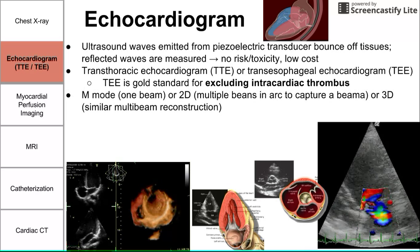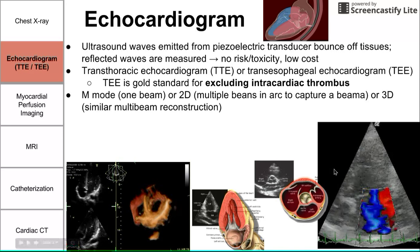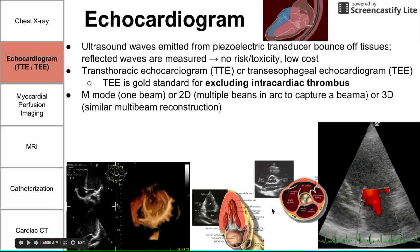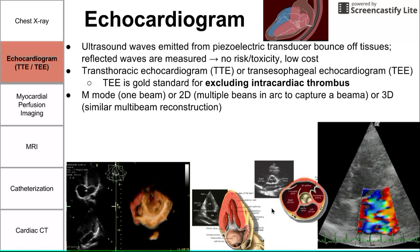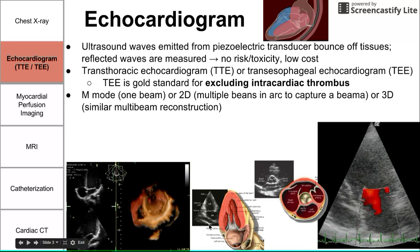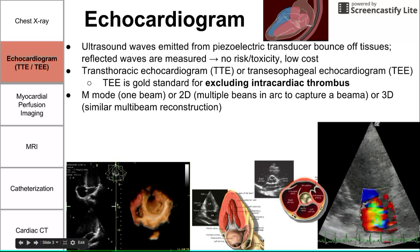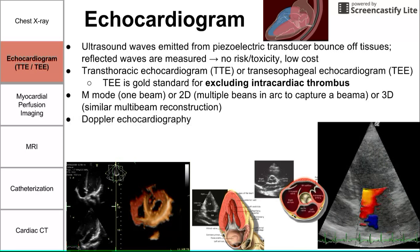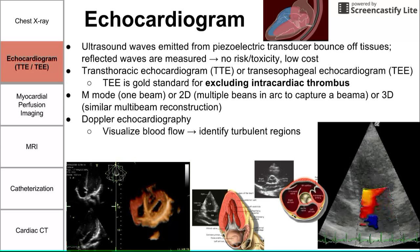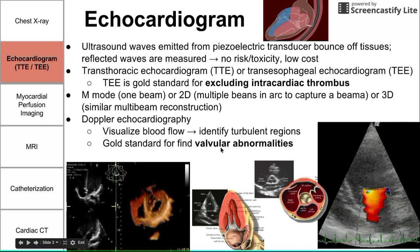When doing echocardiograms, you can have one beam giving one line of resolution, or multiple beams portrayed in an arc to produce a two-dimensional image. The bottom images show different orientations of the heart obtainable using echocardiograms — taken using a standard transthoracic echocardiogram. Three-dimensional images can also be produced through computer image processing. Doppler echocardiography is specifically used to look at blood flow and identify turbulent regions, and is particularly used for identifying valvular diseases and abnormalities.